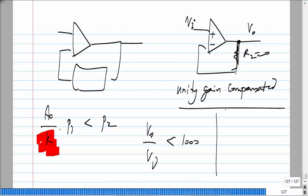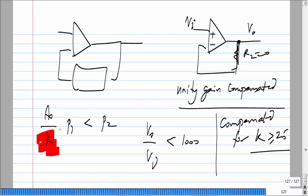That is why there are also op amps which are not unity gain compensated. The data sheet will indicate it is compensated for K greater than or equal to 25 or something. This is done because if you unity gain compensate an op amp and you are only going to use it for gains greater than 25, you will always have an excess of phase margin that was unnecessary, and you will have a bandwidth that is 25 times smaller. So if you want high bandwidth at high gain, you compensate only for that particular value of gain. Many general purpose op amps are unity gain compensated, but there are also variants compensated only for gains greater than 25.